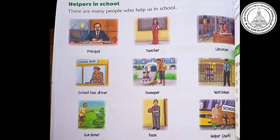There are helpers in school — many people who help us in school. First is the principal, who manages the school, controls the activities, and plans how classes should go. Second is the teacher, who teaches different subjects to us. You have different teachers for different subjects.